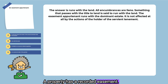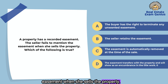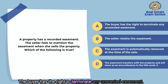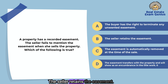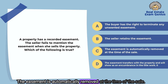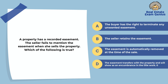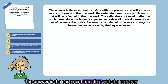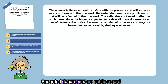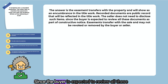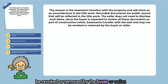A property has a recorded easement. The seller fails to mention the easement when she sells the property. Which of the following is true? The buyer has the right to terminate any unwanted easement, the seller retains the easement, the easement is automatically removed at the time of sale, or the easement transfers with the property and will show as an encumbrance in the title work. Recorded documents are public record reflected in the title work. The seller does not need to disclose such items since the buyer is expected to review all these documents as part of constructive notice. Easements transfer with the sale and may not be revoked or removed by the buyer or seller.